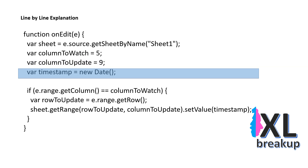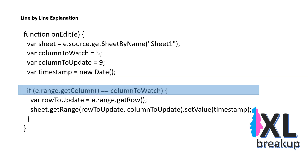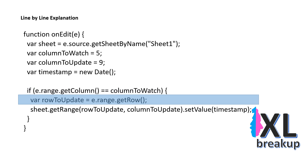This line creates a new variable timestamp, which holds the current date and time. This line checks if the column of the range that was edited, e.range.getColumn, is the same as the column we're watching, ColumnToWatch. This line gets the current row of the range that was edited.